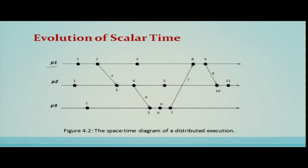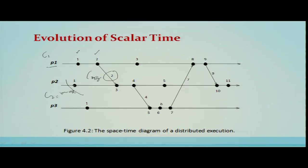When process Pi receives a message with timestamp C(message), it executes three actions: first, it sets Ci = max(Ci, C(message)); then it executes rule R1 (Ci = Ci + d); then it delivers the message. Figure 4.2 shows the evolution of scalar time. For example, in process P1: event 1 is timestamped 1, event 2 is timestamped 2 and is a message send. When this message arrives at P2, P2 takes max(C2, 2) = 2, applies R1 to get timestamp 3, and that becomes the receive event's timestamp.